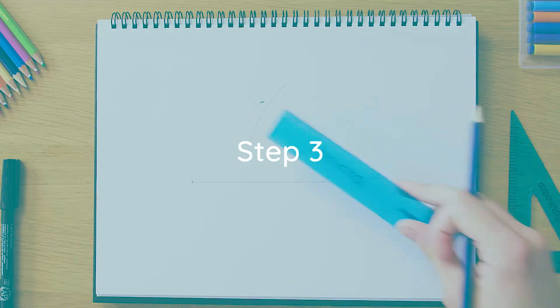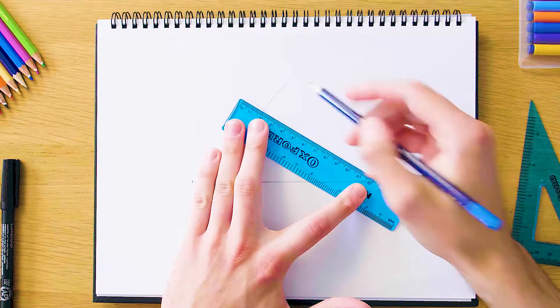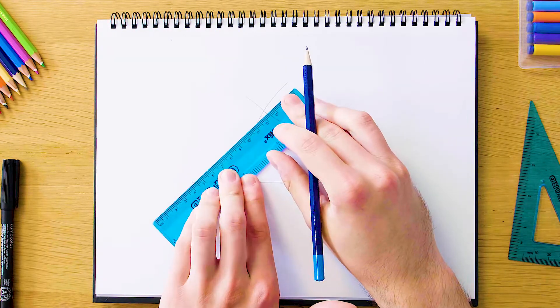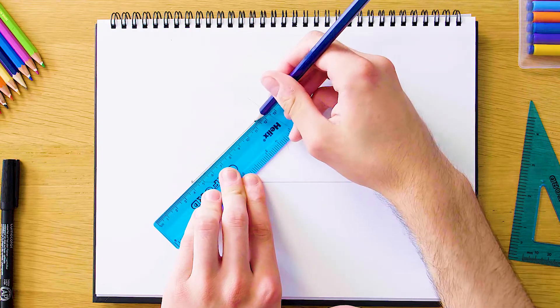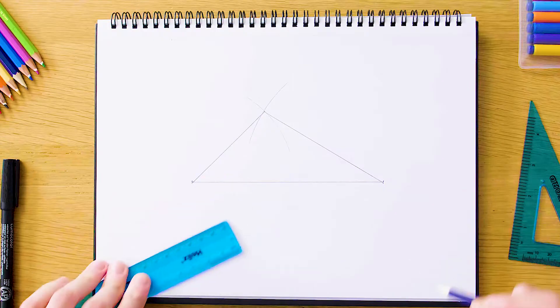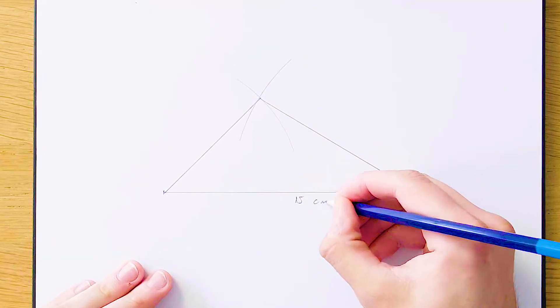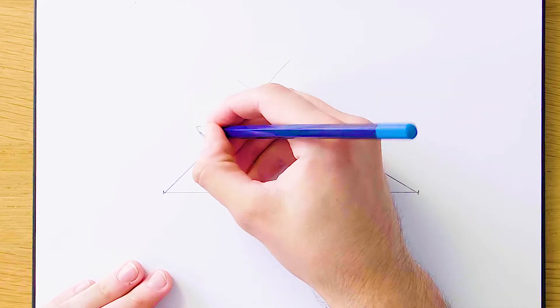Our final step is to join our new intersect above the triangle with our two sides of our 15 centimeter line. We have this length here, and then again on the left we're going to join this vertex with our intersect. That completes our triangle with lengths 15 centimeters on the bottom, 11 centimeters on the right, and 8 centimeters on the left.